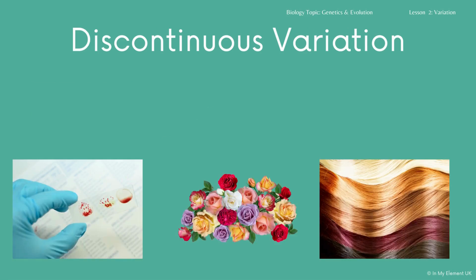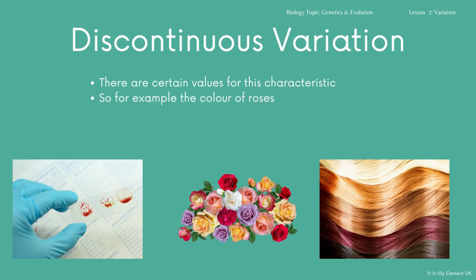Discontinuous variation, on the other hand, falls into clear categories. Examples include blood group, petal colour, hair colour, and eye colour. The colour of roses and tulips are also good examples. So there are certain distinct values for these characteristics.